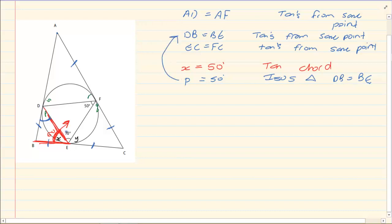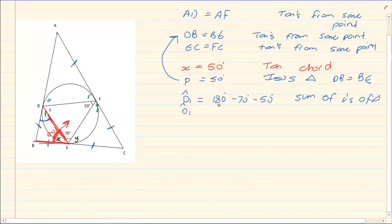Now if that is 70 degrees and P is 50 degrees, what is D1? D1 is equal to 180 minus 70 minus 50 — sum of angles of a triangle. So angle D1 is equal to 60 degrees.